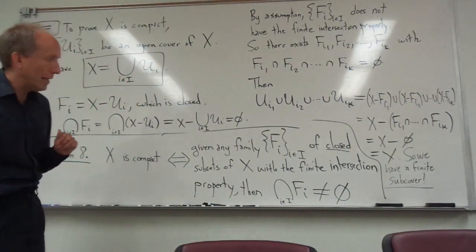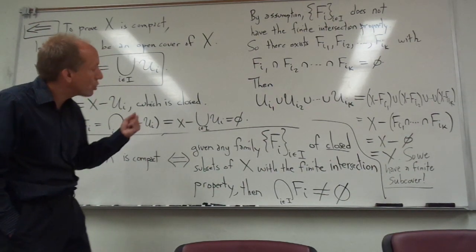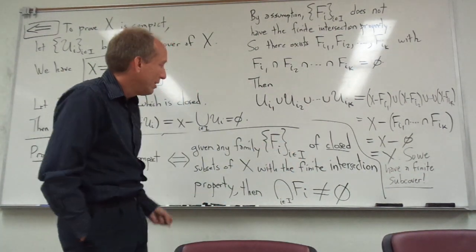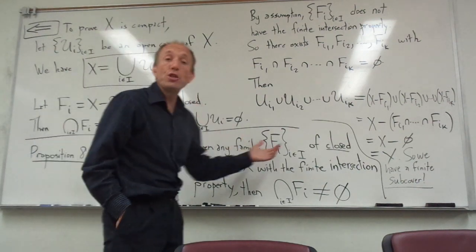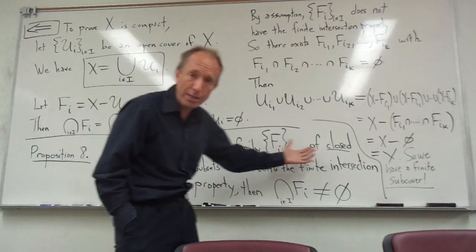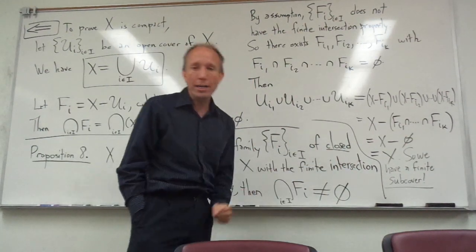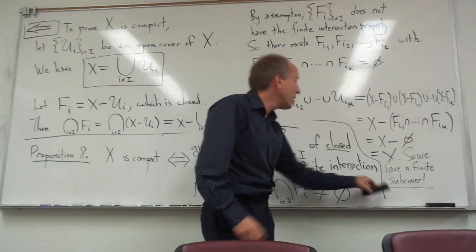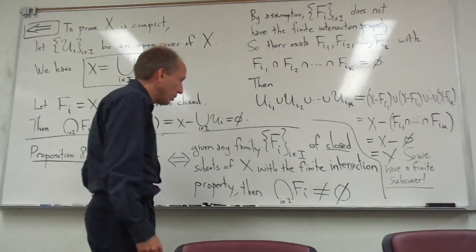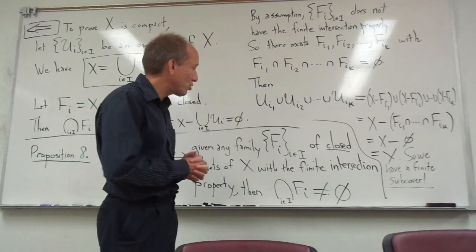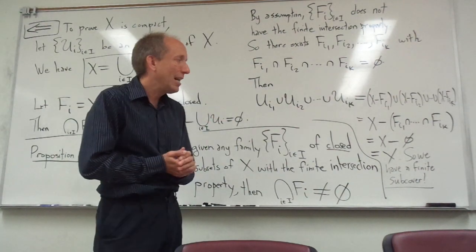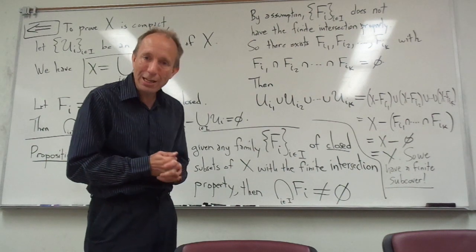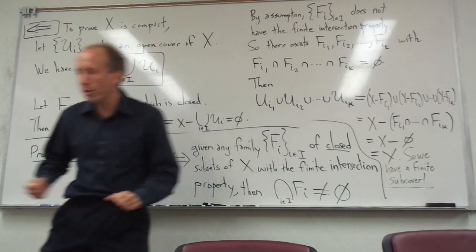So to summarize: this proposition describes compactness in terms of closed sets. Instead of saying every open cover has a finite subcover, we can equivalently say every collection of closed subsets with the finite intersection property must have a non-empty total intersection. Just another way of thinking about compactness in terms of closed sets. I hope this finite intersection property description makes sense. As always, I'm available to answer questions, and thank you for watching.